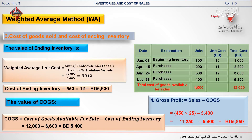The fourth requirement is to calculate the gross profit, which equals sales minus cost of goods sold. Sales equal 450 units multiplied by the unit selling price of 25 BD, minus the cost of goods sold calculated in requirement 3. The gross profit equals 5,400 BD.